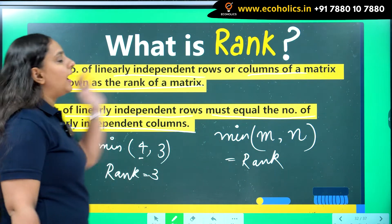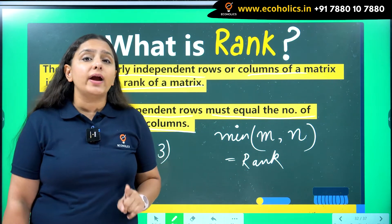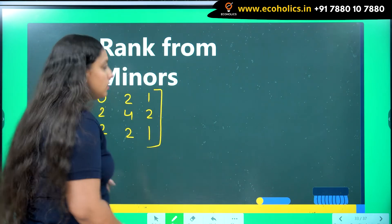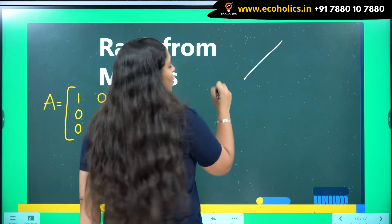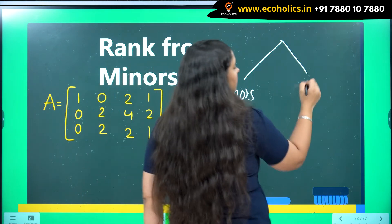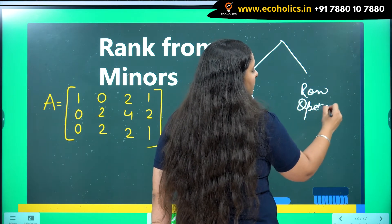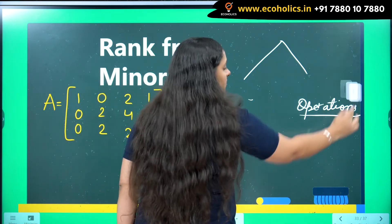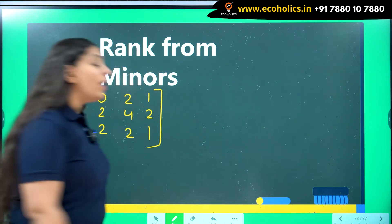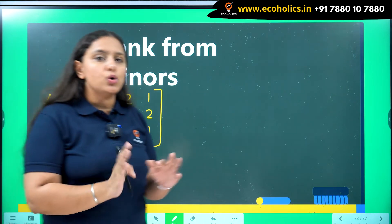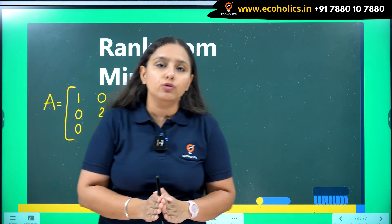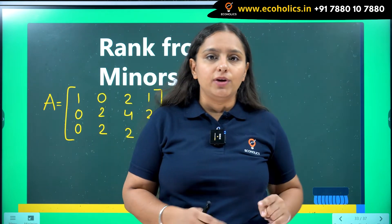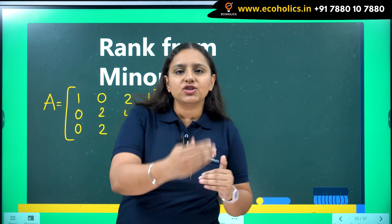Now, how to find rank. You can find rank through two methods. I will be discussing the easiest one: you can find rank through minors or through row operations. In this video I will be discussing the method of minors, as it is the easiest. The first observation is whether you are working with a square matrix or a rectangular matrix.